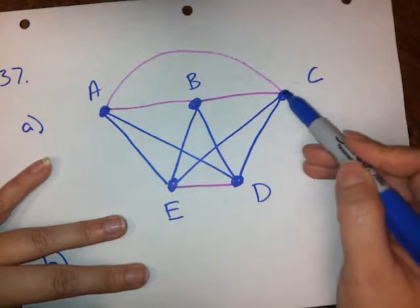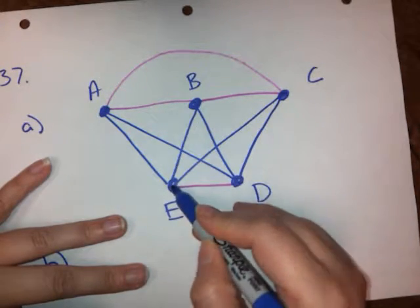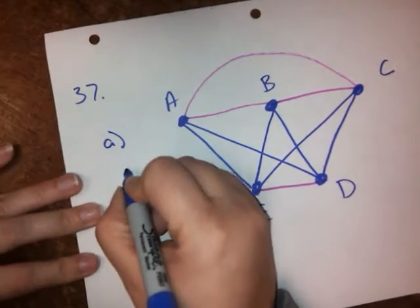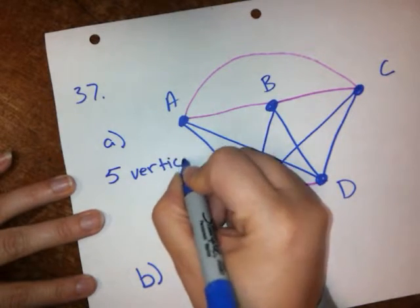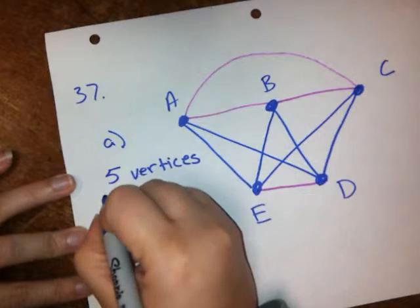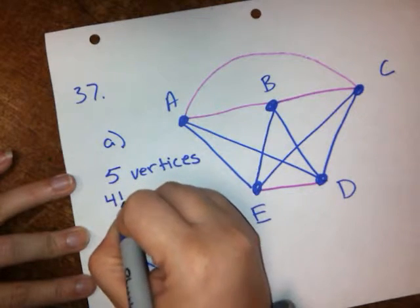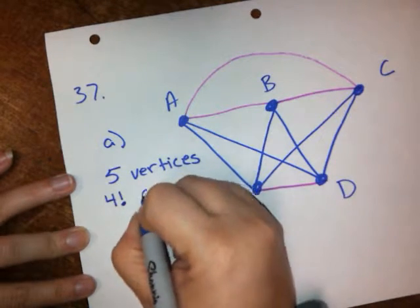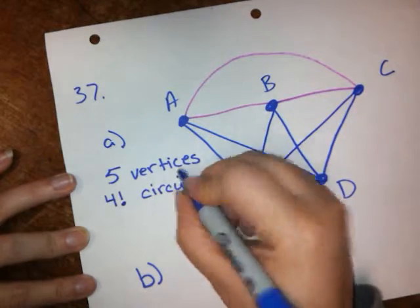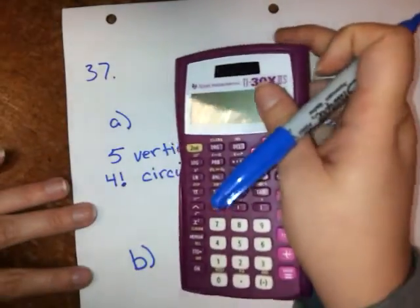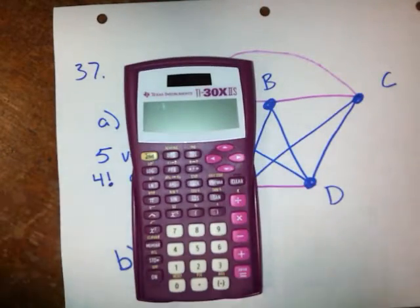So, we've got one, two, three, four, five vertices. So, five vertices means that there are four factorial circuits. I cannot spell circuits for the life of me. All right, so what was four factorial? Let's go over how to find that on your calculator again.